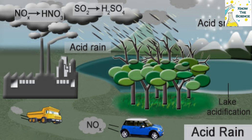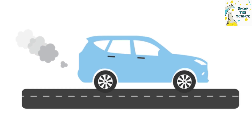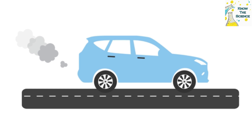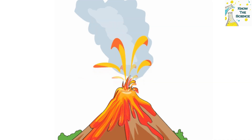Acid rain is one of the consequences of air pollution. Gases produced from the burning of fuels react with the oxygen in the air and water vapor, transforming into acids that fall onto the earth's surface as rain. This acidification of the earth and surface water has devastating effects on ecosystems and poses a serious danger to living beings.